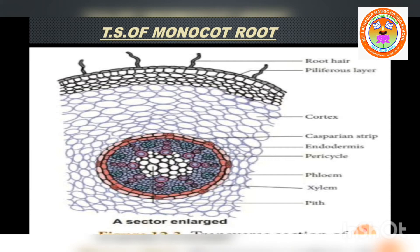Next to epiblema, we can see the cortex. Cortex is a multi-layered larger zone composed of parenchymatous cells which are loosely arranged with lots of intercellular spaces. The major function of cortex is to store water and food material.